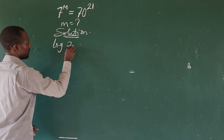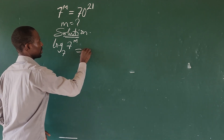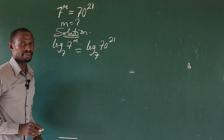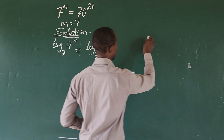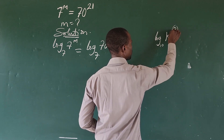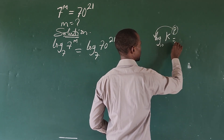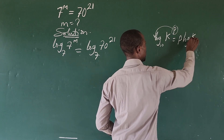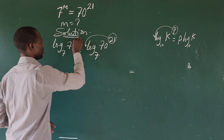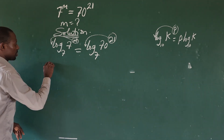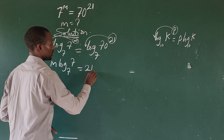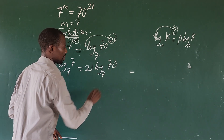So we have: log base 7 of (7 to the power of m) equals log base 7 of (70 to the power of 21). We know the law of logarithm which says log base 10 of (k to the power of p) equals p times log base 10 of k. Applying that here, we move m to the front: m times log base 7 of 7, equals 21 times log base 7 of 70.